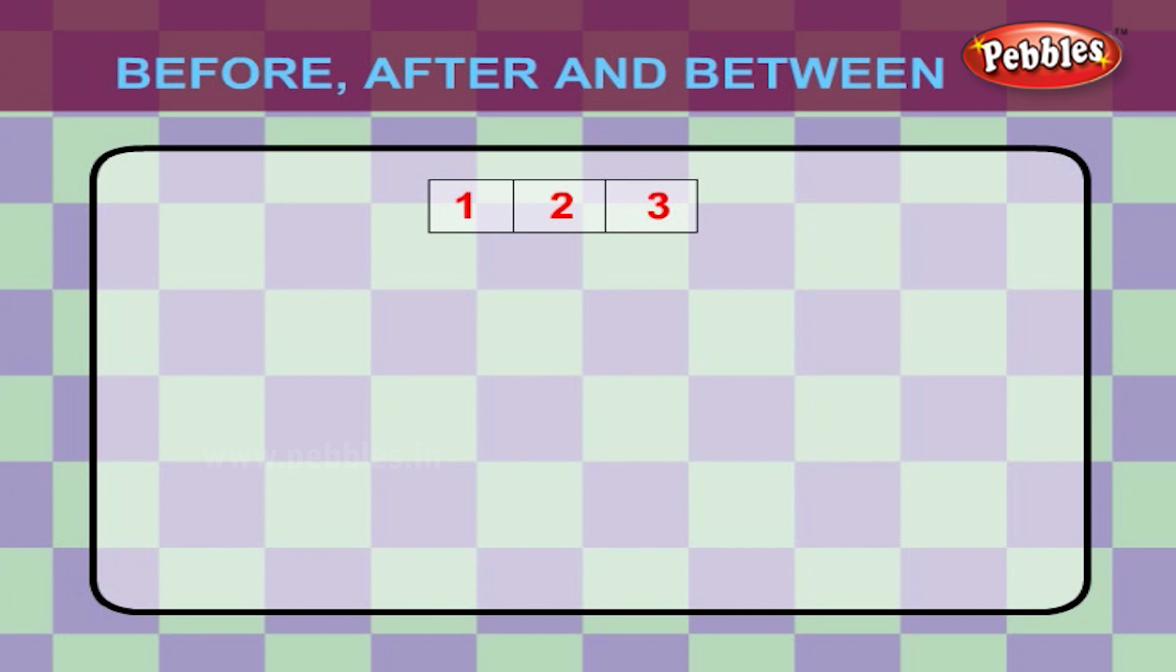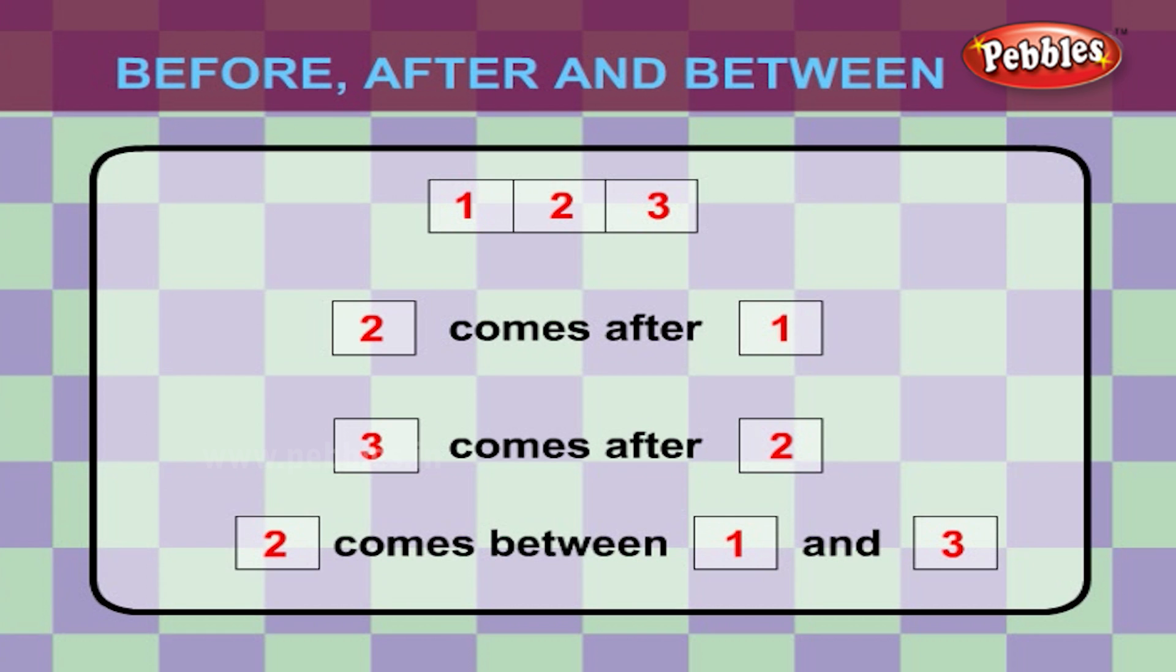Let us take the first three numbers 1, 2 and 3. 2 comes after 1 and 3 comes after 2. 2 comes between 1 and 3.